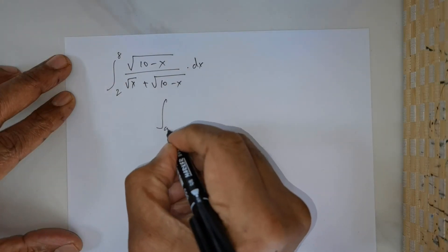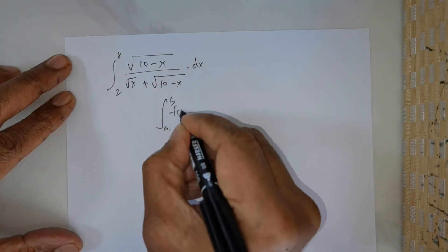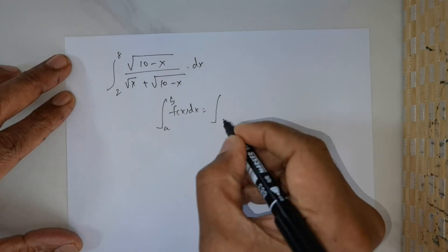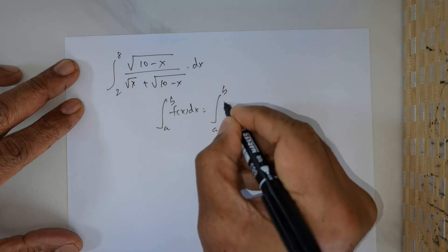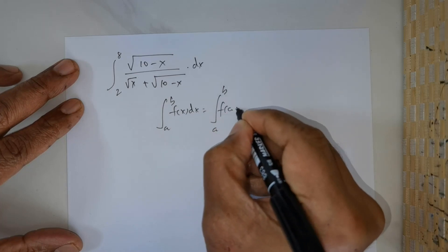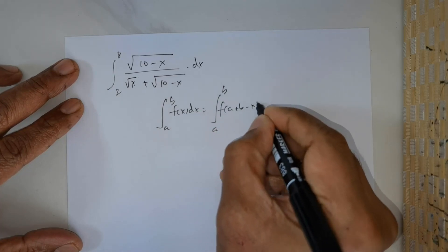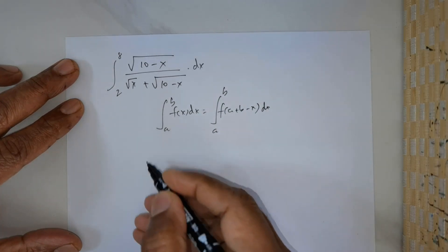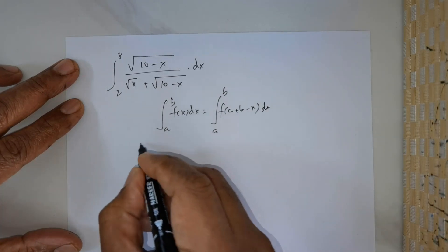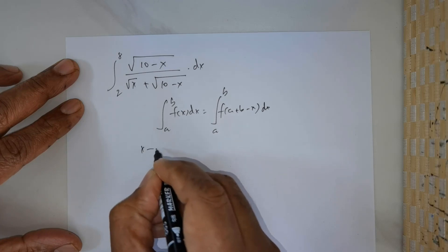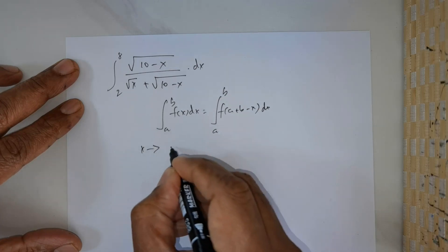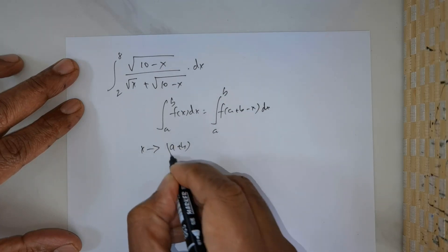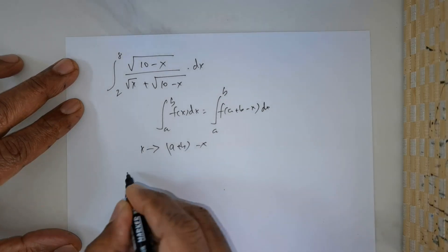We will use this property: the integral from a to b of f(x) dx is equal to the integral from a to b of f(a + b - x) dx. So wherever you have x, you replace it with a + b - x.